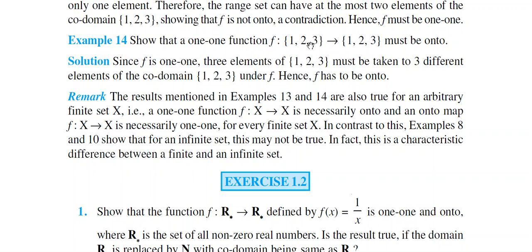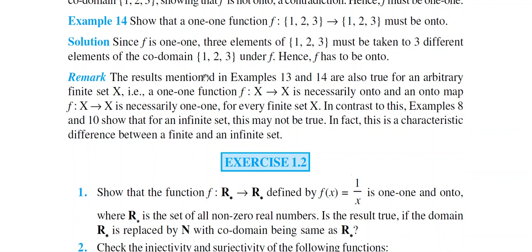Otherwise, this relation would not be a function or one-one — a contradiction. Since f is one-one, the three elements of {1,2,3} must be taken to three different elements of the co-domain {1,2,3} under f. Hence f has to be onto.